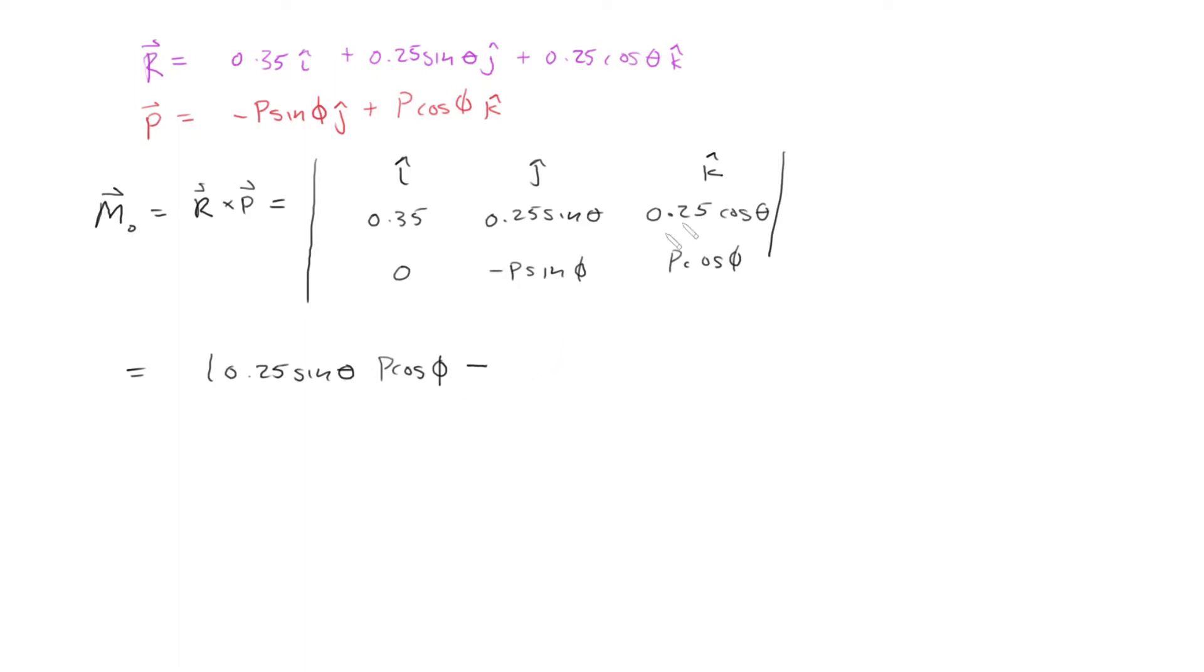this is a minus this times that, this actually makes it a positive. So this will be 0.25 P sine phi cosine theta, and that will be in the i direction.